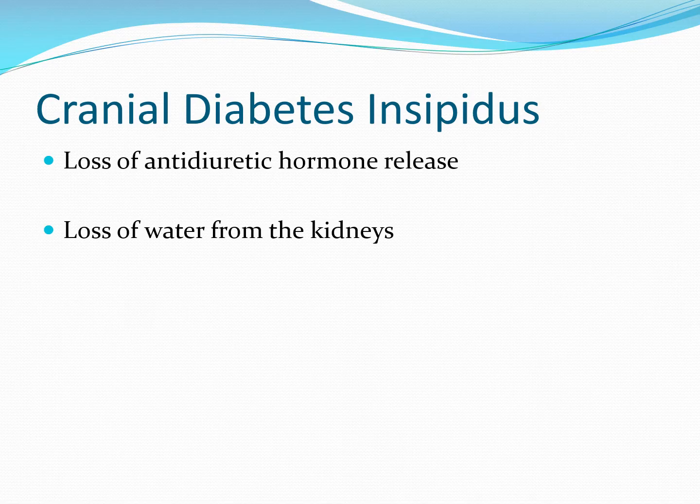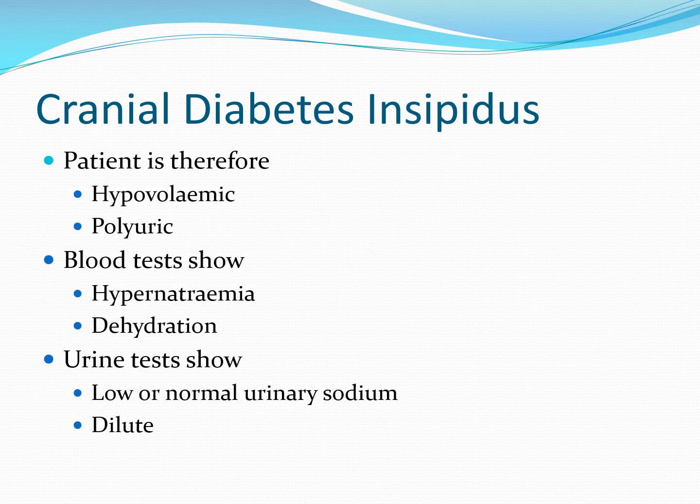Cranial diabetes insipidus is due to the loss of antidiuretic hormone release from the posterior pituitary. This results in profuse loss of water from the kidneys. Our patients are therefore hypovolemic and polyuric. Blood tests will show high levels of sodium — hypernatremia and dehydration. Urine tests typically show low or normal urinary sodium levels, but the urine is very dilute with a low osmolality.